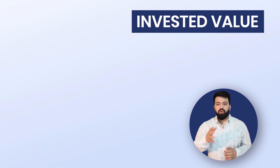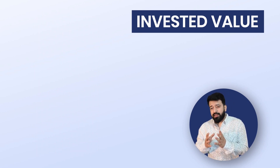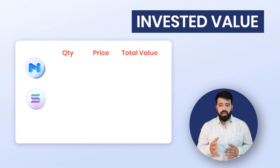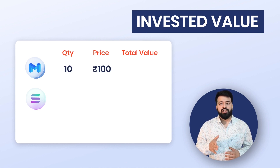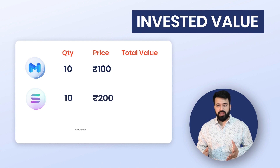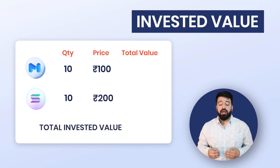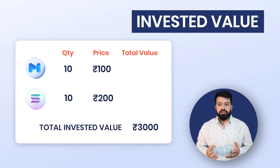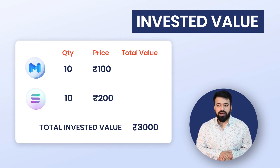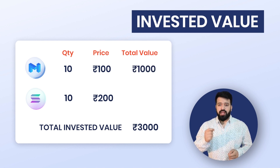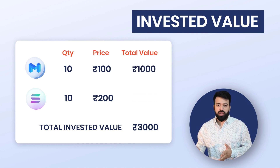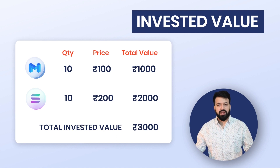Suppose you have two different coins as your current holdings — let's say the first one is Matic and the other one is Solana. You bought 10 Matic coins at 100 INR and 10 Solana coins at 200 INR. So aapka total invested value nikal ke aayega 3000 INR, which is Matic 10 x 100 = 1000 INR aur Solana 10 x 200 = 2000 INR. So 1000 + 2000 = 3000 rupees.